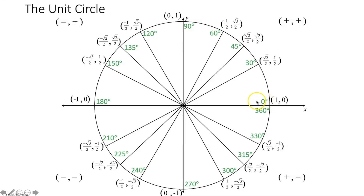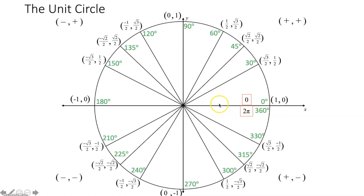Now we need to label these angle measures in terms of radians as well. Just like we started with degrees, we're going to start with zero radians on the positive x-axis. In the unit circle, we have a radius of one unit, meaning that if we were to calculate one full revolution around the unit circle, we would use the circumference formula 2πr, plug in one for the radius, meaning one full revolution in terms of radians would be 2π. So if the initial side of our angle is on the positive x-axis and we swing our terminal side all the way around one revolution, that would be 2π radians.